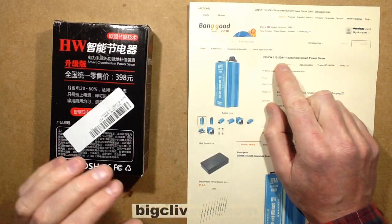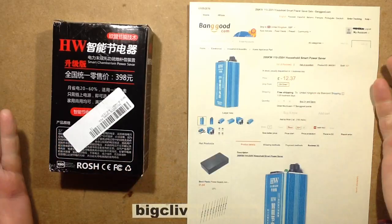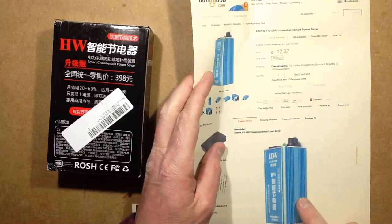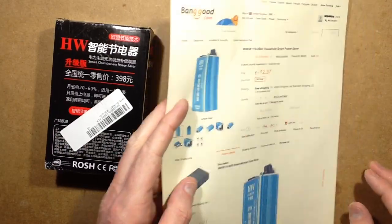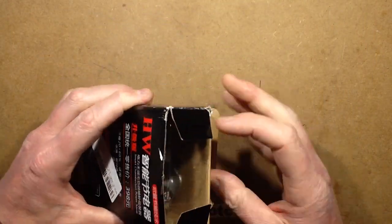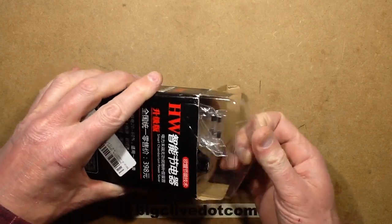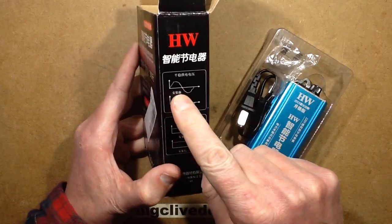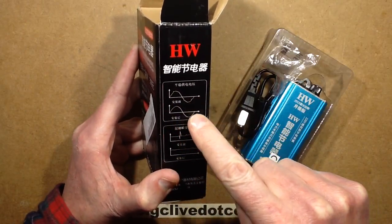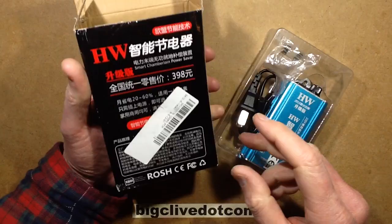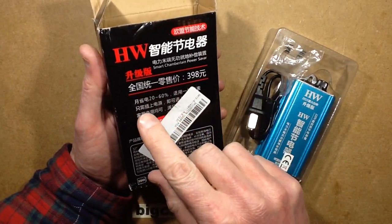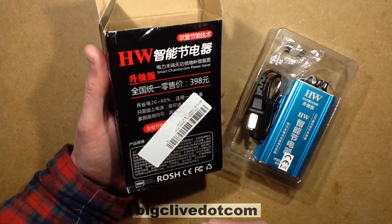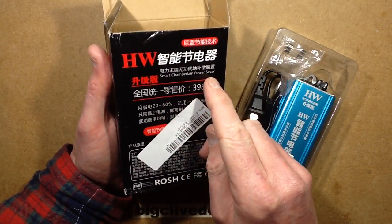It's a 200 kilowatt 110 to 250 volt household smart power saver. I've already taken some similar units to bits, but I thought I've not taken one of the aluminum cased ones to bits. I quite enjoy them. I like the fact that they are quack products. This one apparently turns your rough squiggly sine wave into a perfectly smooth sine wave and in doing so probably means it's going to save you 20 to 60% off your electricity bill.